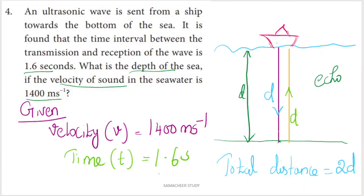Fourth problem: An ultrasonic wave is sent from a ship towards the bottom of the sea. It is found that the time interval between the transmission and reception of the wave is 1.6 seconds. The wave is sent from a ship to the bottom of the sea. If the distance is d, then the wave travels to the bottom and returns.